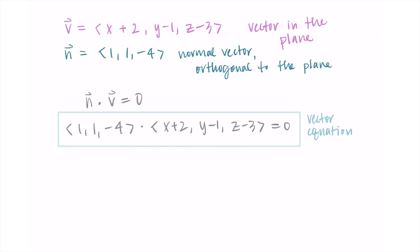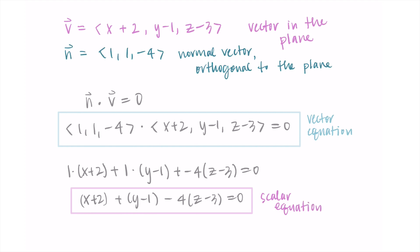So in order to find that, I'm just going to compute the dot product. So I do one times x plus two, that's the product of the x components. I add it to one times y minus one, that's the product of the y components. And then I add it to negative four times z minus three, that's the product of the z components. And this is equal to zero. And as written, if I just clean it up a little bit, this is my scalar equation of the plane. So x plus two, plus y minus one, minus four times z minus three. So this would be a fine answer as is, and we found the equation of the plane.